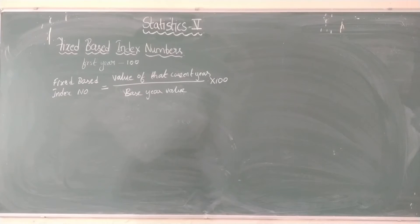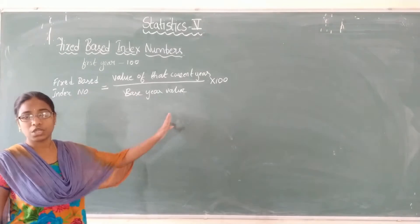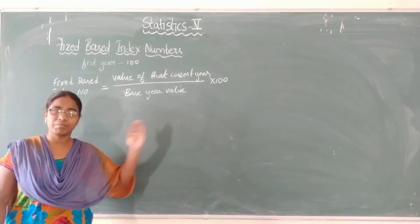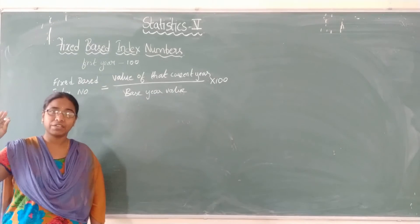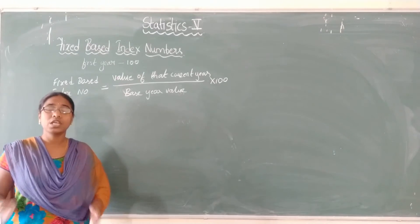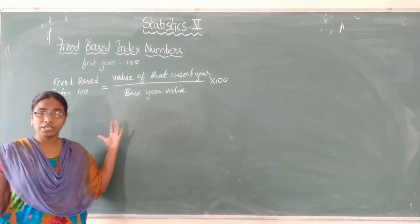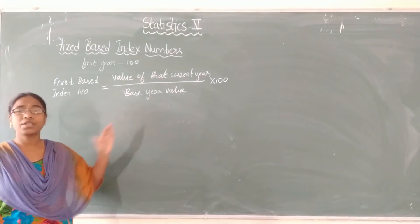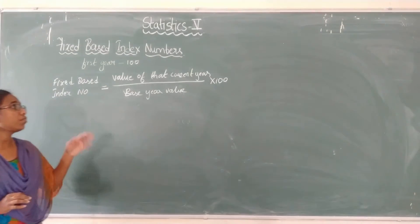The base year should be normal and should not be too distant from the current year. For example, if I am calculating the index for 2015, I cannot use 1885 or 1880 as the base year because they are too far away — there will be too much difference. Obviously, if the years are far apart, the differences will be large. Whatever base year you are choosing, it should be very normal and should not be very distant from the current year.